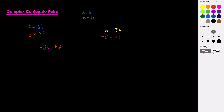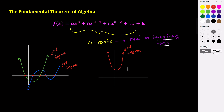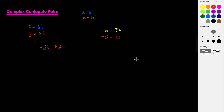When looking at conjugate pairs, the value of a remains the same, and the values of b are just opposites — one's positive, one's negative. So those are called conjugate pairs. Anytime you're dealing with a polynomial like this second degree polynomial that has no real roots, we know it will have two imaginary roots, and these imaginary roots always come as complex conjugate pairs.